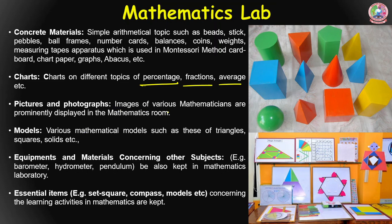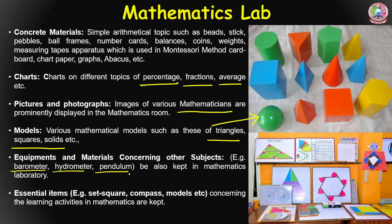The lab also has pictures and photographs — images of various prominent mathematicians can be displayed in the mathematics room. Mathematical models such as those of triangles, squares, and solids can be made and displayed so students gain physical insight into 2D and 3D structures. Equipment from other subjects like the barometer, hydrometer, and pendulum — which have mathematical implications — can also be kept, along with essential geometrical tools like set square, compass, and protractor for use during practical sessions.